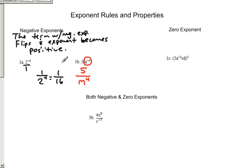All right, as we go to zero exponents, anything to the zero power equals 1. So, in this problem here, 1c, you have 3a to the negative second, cd, all to the zero. The answer for this is just 1.